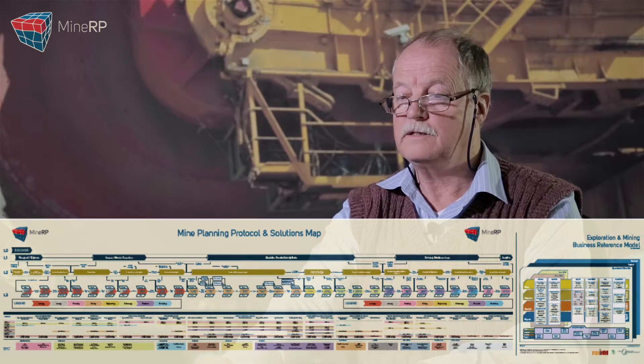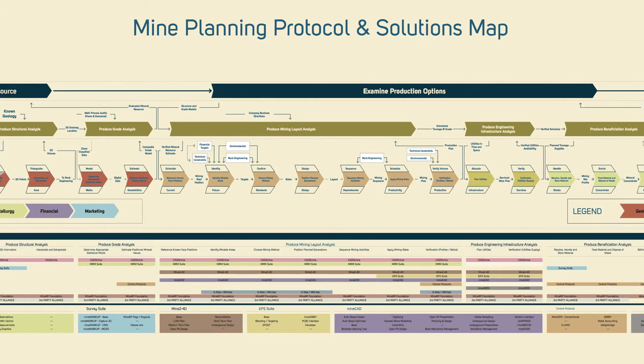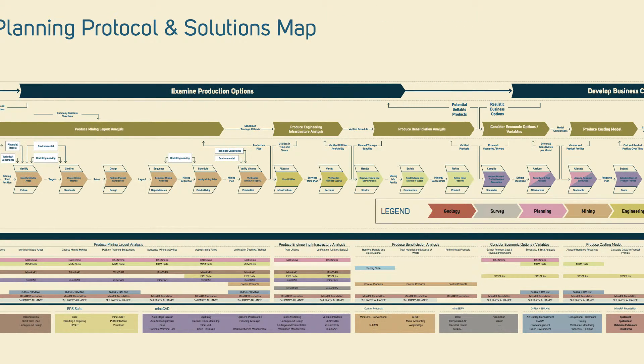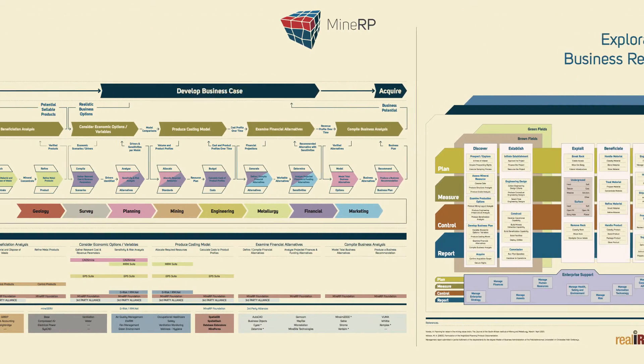We can then use that to map in the applications that we use — in our case we've mapped Mine RP's offerings, although we could just as easily use the same backdrop to map a client's applications. Some people call it 'the scroll' but it's a fairly lengthy piece of paper, and there you have it in one view: the entire scope of mine planning at a level 3 detail, color-coded by discipline, with all of the tools and applications you need to make the process work.